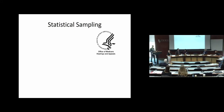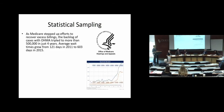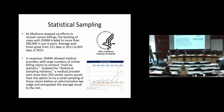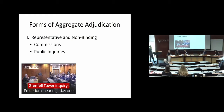Beyond the class action context, we've also used statistical sampling. Following an incredible surge of claims with the Office of Medicare Hearings and Appeals involving Medicare reimbursement claims, they piloted a program where you can get a sampling of maybe 30 claims for, say, 1,000 particular claims. You try those 30 claims and extrapolate the results to the rest. So again, binding and representative forms of adjudication.